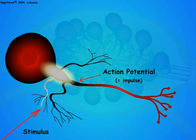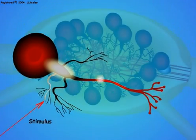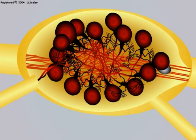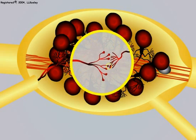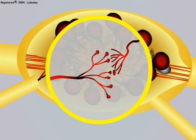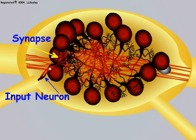Action potentials travel by self-propagation along the entire axon. The branching at the end of the axon conveys information to the dendrites of many other neurons. Information is transferred between neurons at a point of contact called the synapse. In this illustration, information comes into the ganglion on an input neuron, is transferred at a synapse to a ganglionic neuron, and is subsequently distributed to many other neurons.